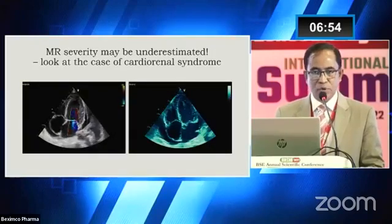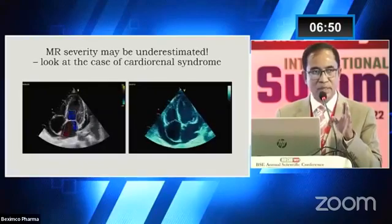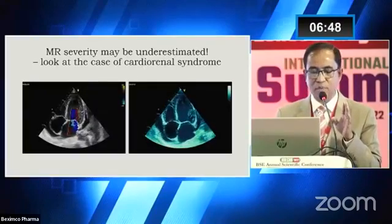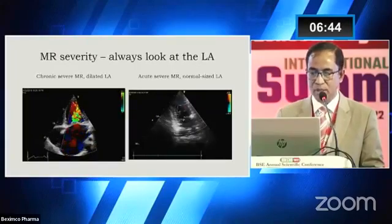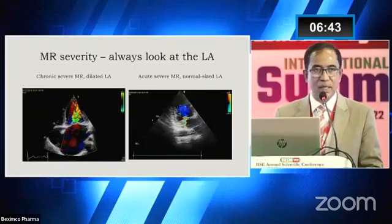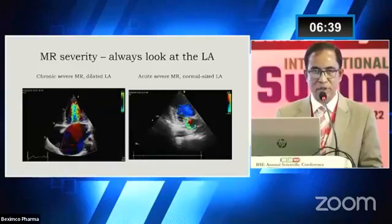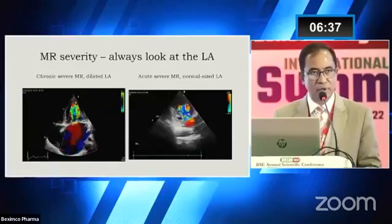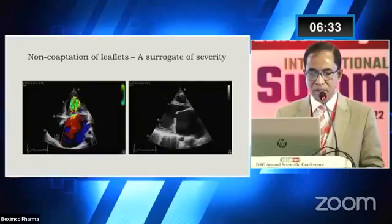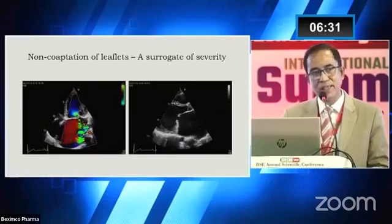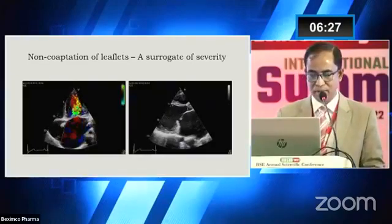Also, you have to consider left ventricular function when interpreting the jet, because in the case of poor left ventricular function, the jet may appear of lower magnitude. Regarding MR severity, the left atrium should also be assessed, because left atrial dilatation is a surrogate marker for severity of mitral regurgitation. If left atrial dilatation is present, this is a telltale sign of significant MR severity.